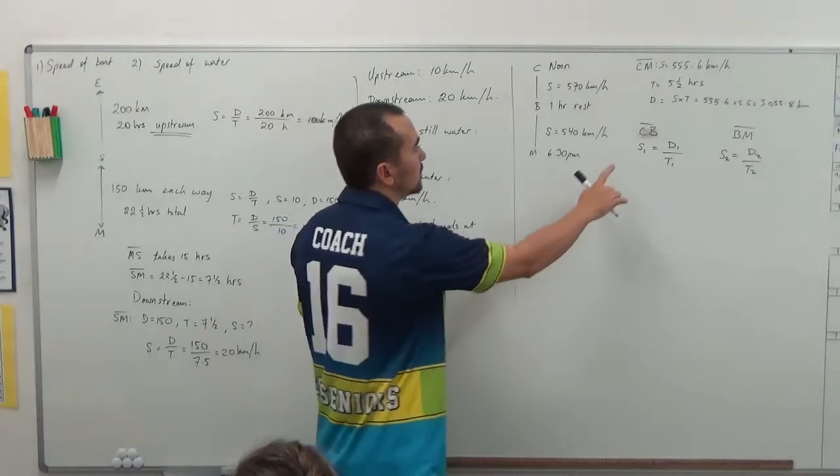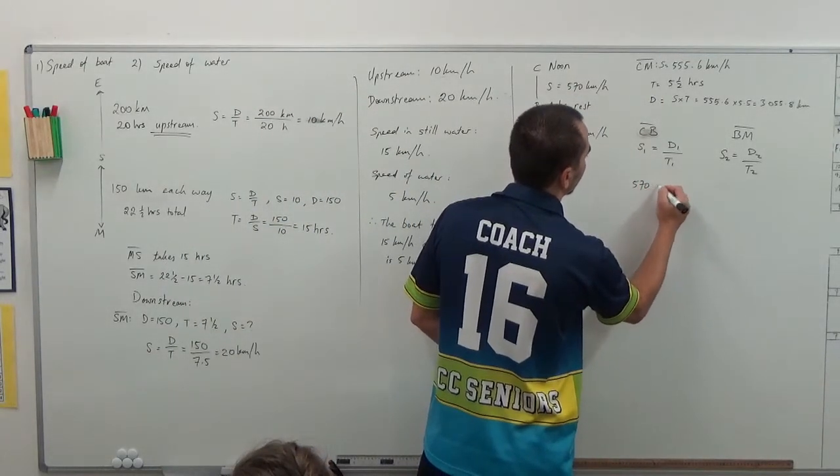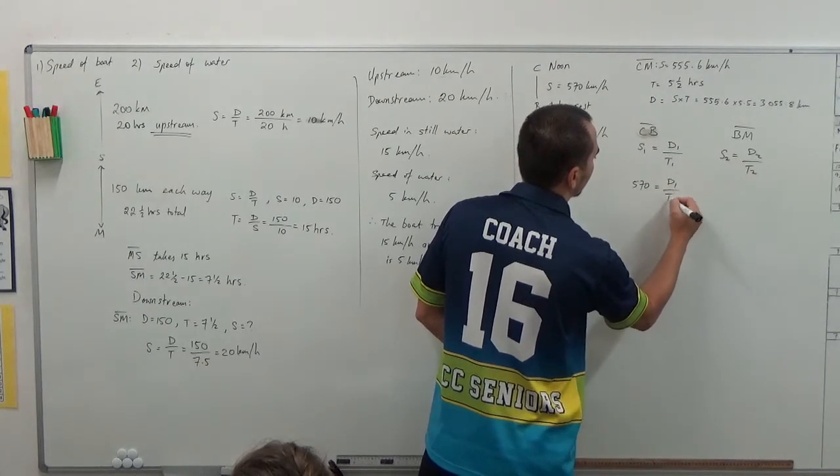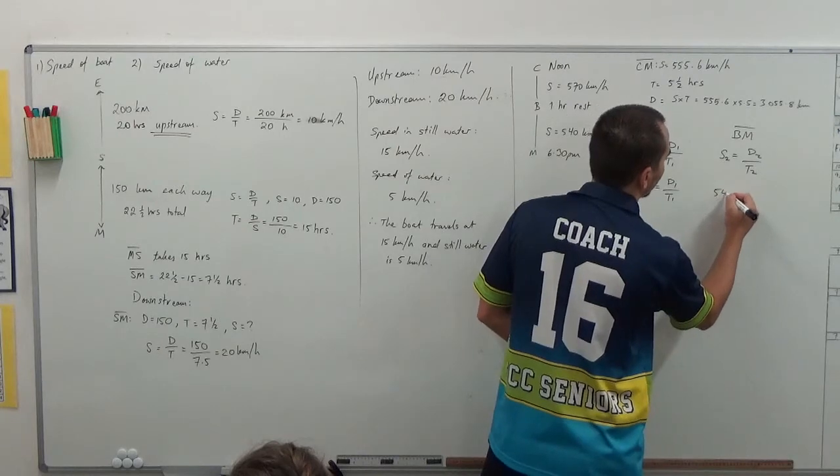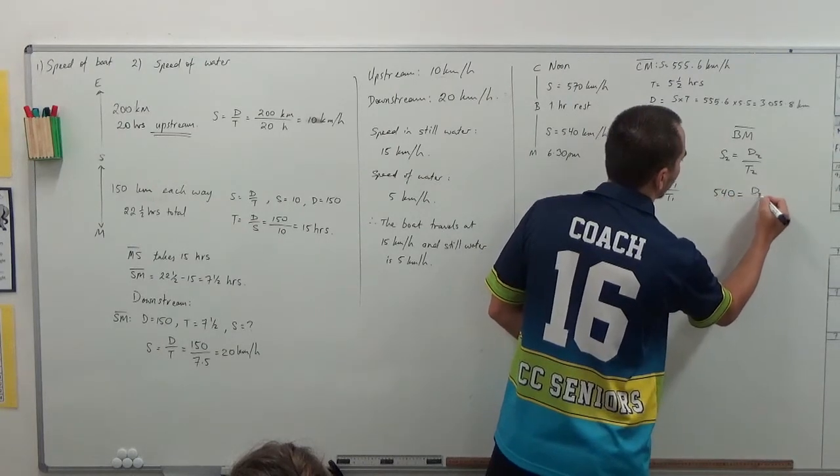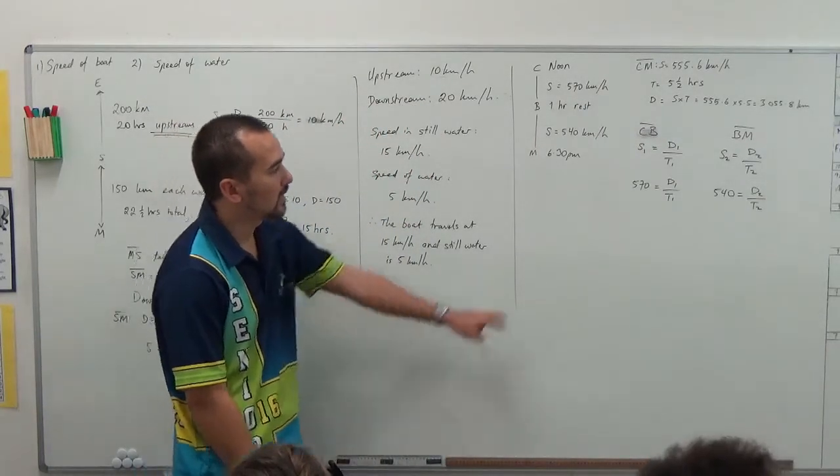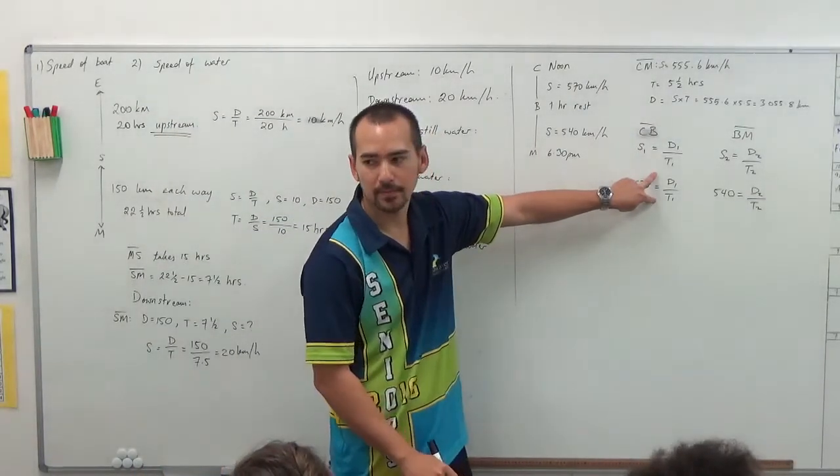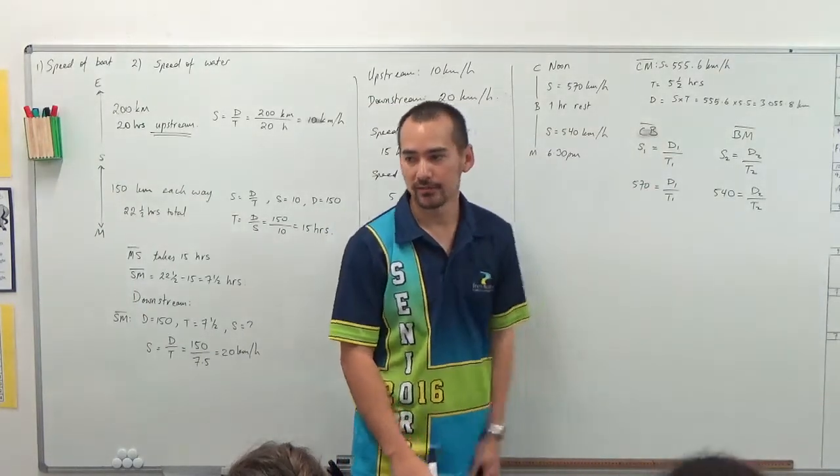Okay. We know what the speed here is, it's given to us, it's 570. And the second speed is 540. And so we have two unknowns, two variables, which means we need two equations to solve two variables.